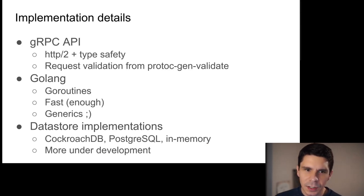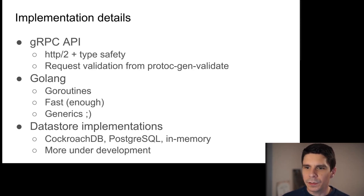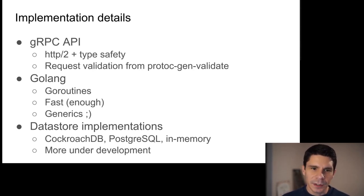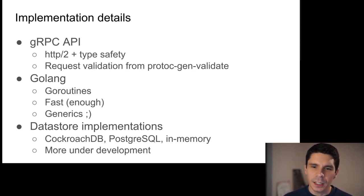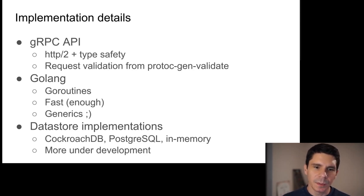A few more implementation details: we are primarily a gRPC API for HTTP/2 parallelism, pipelining, and type safety. We use proto-c-gen-validate for syntactic request validation plus a semantic validation layer on top. SpiceDB is written in Golang — we chose it because we're familiar with it, goroutines make parallel computation elegant, it's fast enough, and we did it for generics support. Data store implementations include CockroachDB, Postgres, in-memory, and a couple more under development.